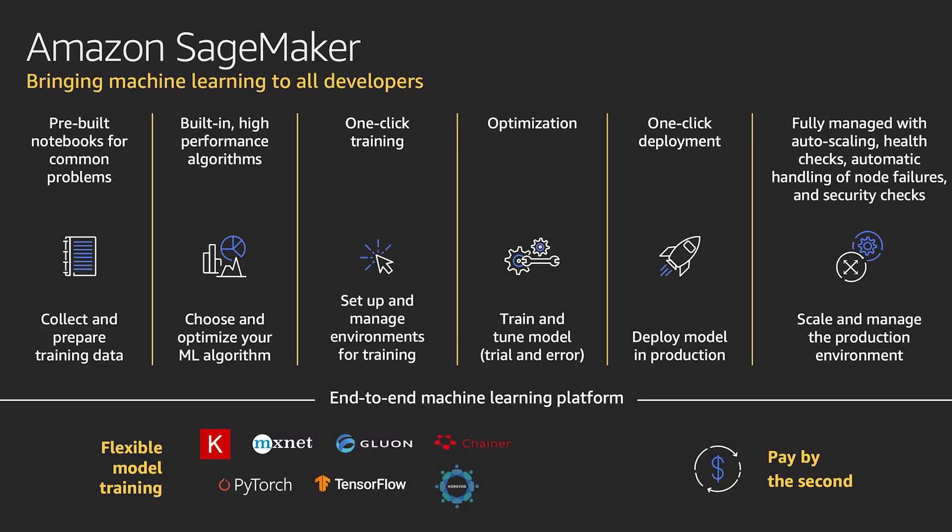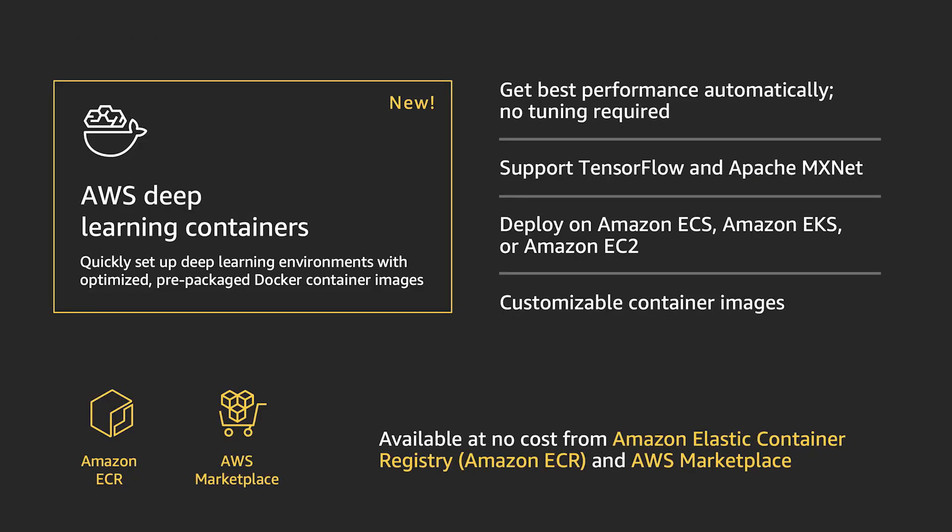P3 also provides a powerful option for ML training as part of Amazon SageMaker, which is our fully managed service that covers the entire ML workflow from data preparation, algorithm development, model training, and deployment. There is also full support for Amazon Elastic Kubernetes Service and Elastic Container Service to make it easy to deploy, manage, and scale containerized applications.